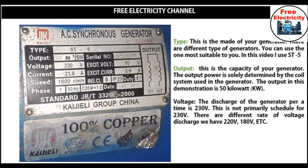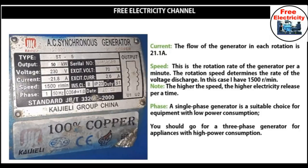The copper of the generator plays a vital role in the generating system. For some of you in countries that heavily use generator systems like in Africa, you know what I'm talking about. But if you're in the USA where they have stable power supply, you may not have a good idea of what copper is all about. Copper is essentially a naked cable — a wire — that meets the current when the magnetism is applied.